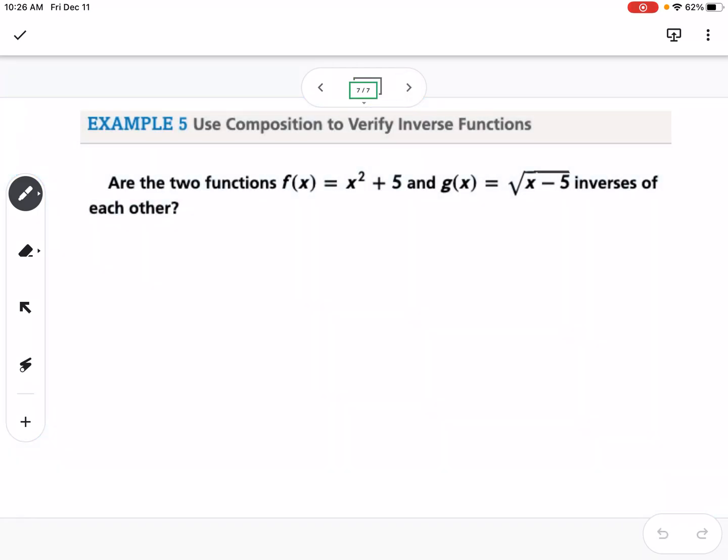Okay, and so then the last thing is how do we verify that two functions are inverses? So in order to verify, we have to take f of g of x, and that should be equal to g of f of x, because we know that's not always the case, but it is the case if you have two inverse functions. So we take f of g of x and g of f of x, and they should both equal x when simplified. So we're going to do that.